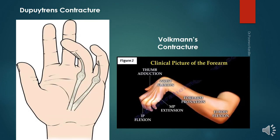This slide has two figures: Dupuytren's contracture and Volkmann's ischemic contracture. Dupuytren's contracture is progressive fibrosis of the ulnar side of the palmar aponeurosis, resulting in shortening and thickening of fibrous bands extending from the aponeurosis to the little finger and ring finger. The ring finger is most commonly affected and it is more common in men over 40 years. The proximal and middle phalanges are acutely flexed while the distal phalanges remain extended. Surgical resection of the palmar aponeurosis is required.